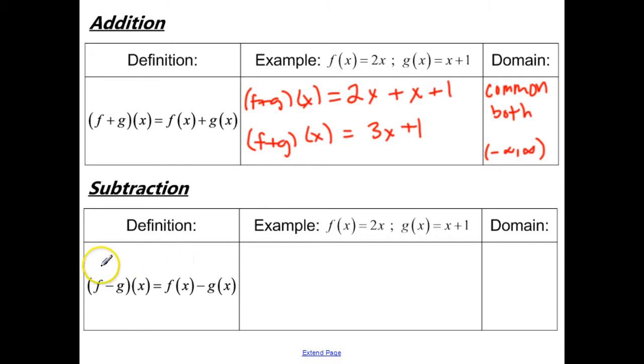For subtraction, it's the same idea. f minus g of x is going to be f of x minus g of x. Now with this one, as with subtraction and when you're generally dealing with negatives, you do need to be a little bit careful because we want to take f of x and we want to subtract g of x. So make sure you put that second function in parentheses so that you'll be able to distribute that negative sign.